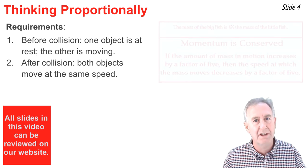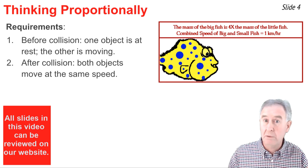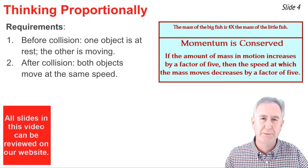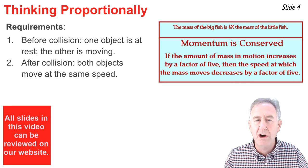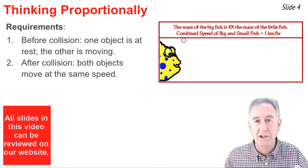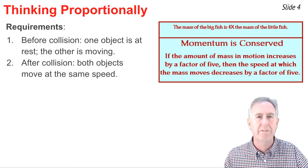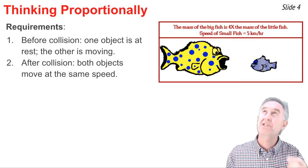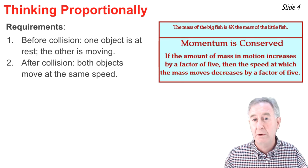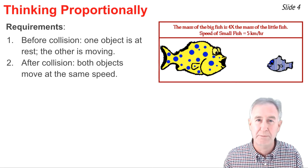As an example, consider a small fish with mass m colliding with a big fish with mass 4m. Before the collision, all the momentum is in that little fish's mass. After the collision, the amount of mass sharing all that momentum is m plus 4m, or 5m. The amount of mass that is moving has increased by a factor of 5, so in order to keep momentum the same, the speed must decrease by a factor of 5.